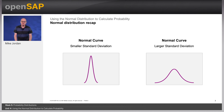The graphs show that when the standard deviation is small, the curve is tall and narrow, and when the standard deviation is big, the curve is short and wide.